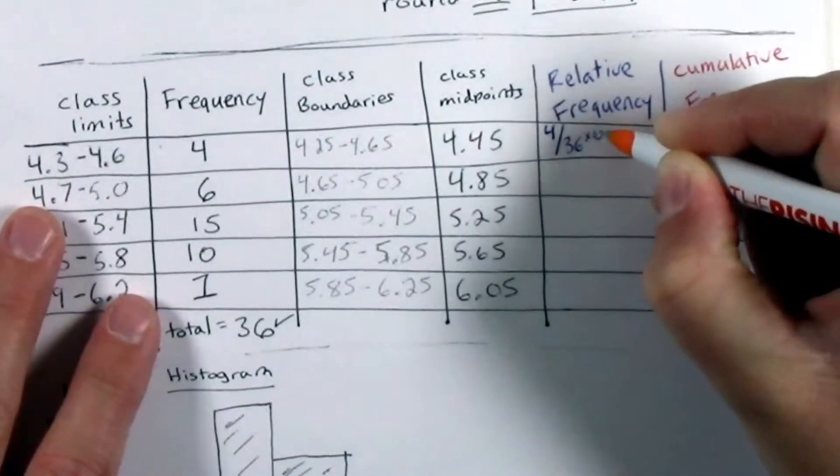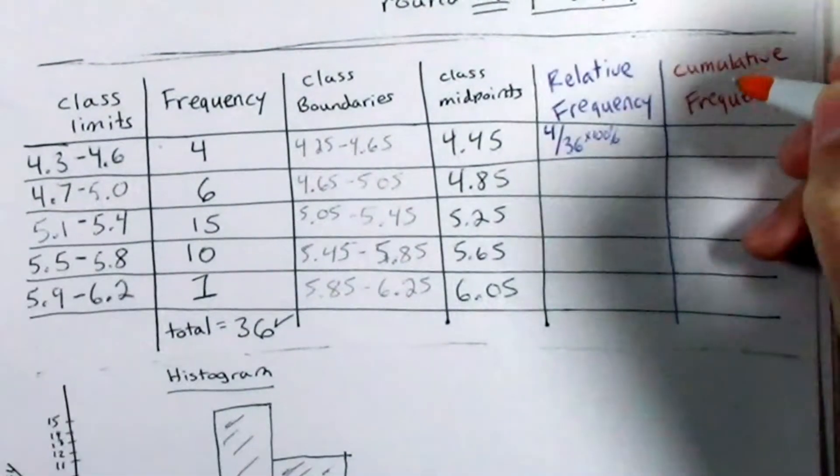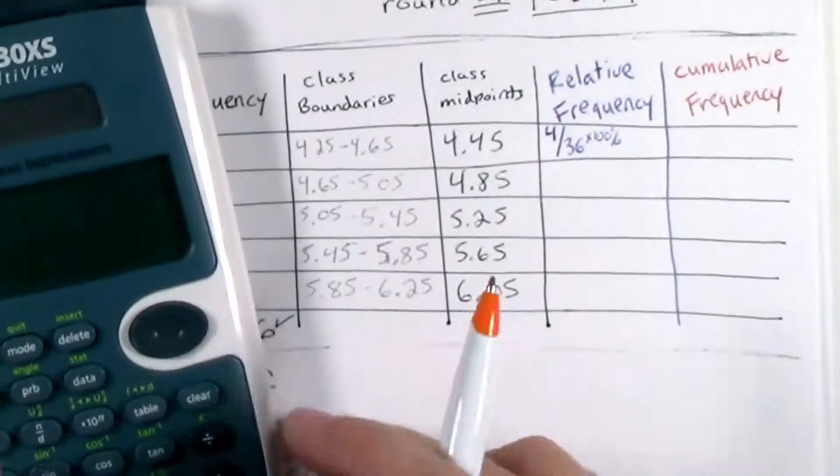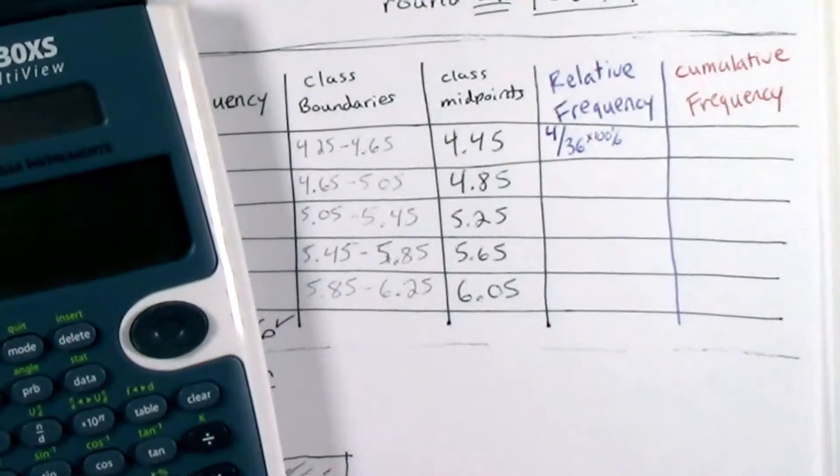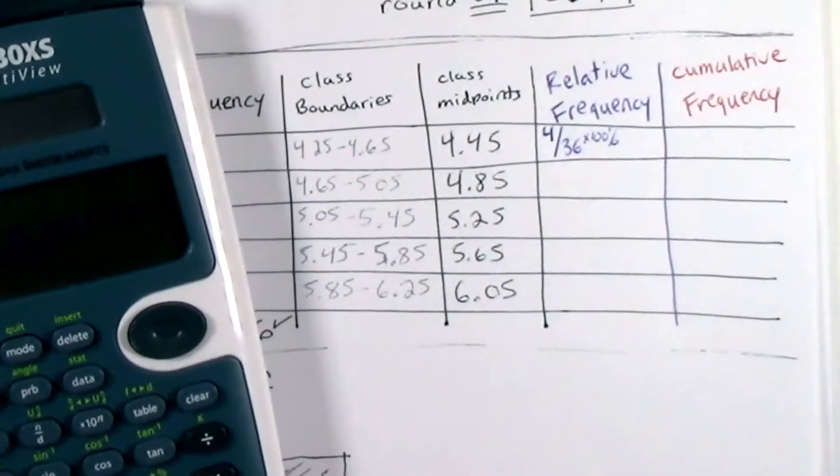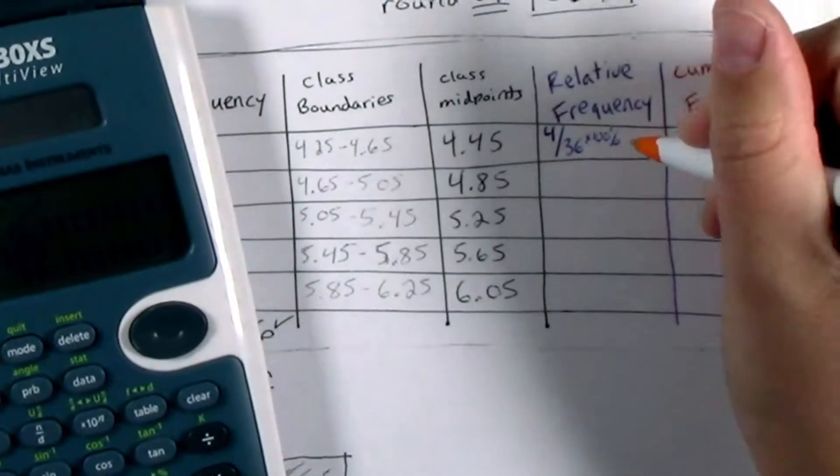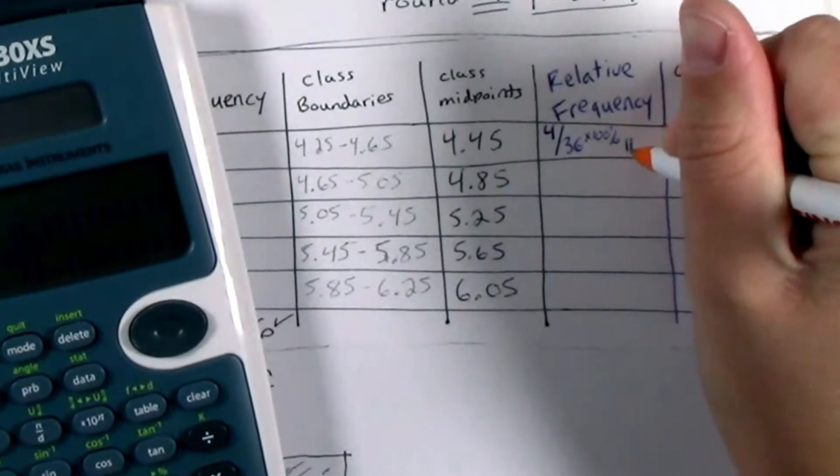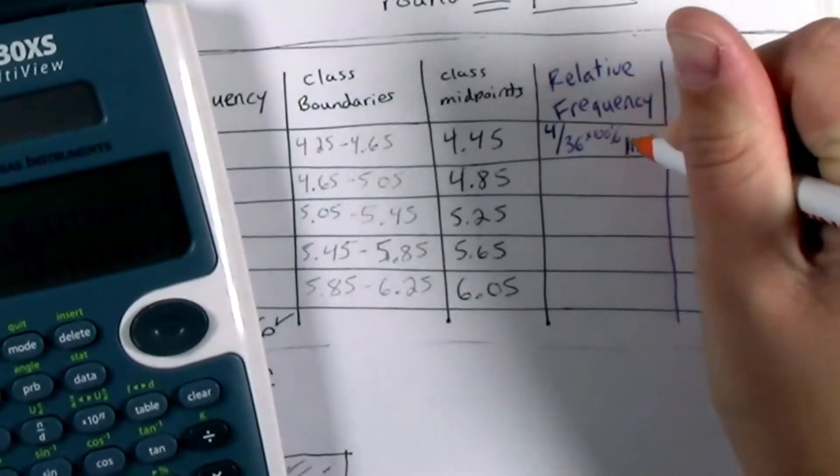a decimal, or a percentage. My favorite way to provide my relative frequencies is with a percentage. So I'll go ahead and multiply this by 100%, and I'll get 11.1%.